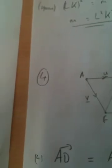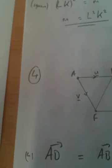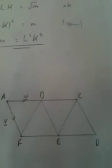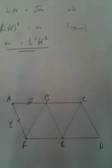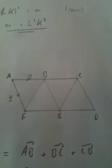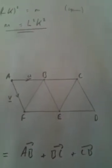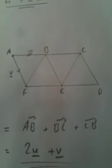First question is, write down AD in terms of u and v. To get from a to d, I go a to b, b to c, then c to d. So, that'll be u plus u plus v, or 2u plus v.